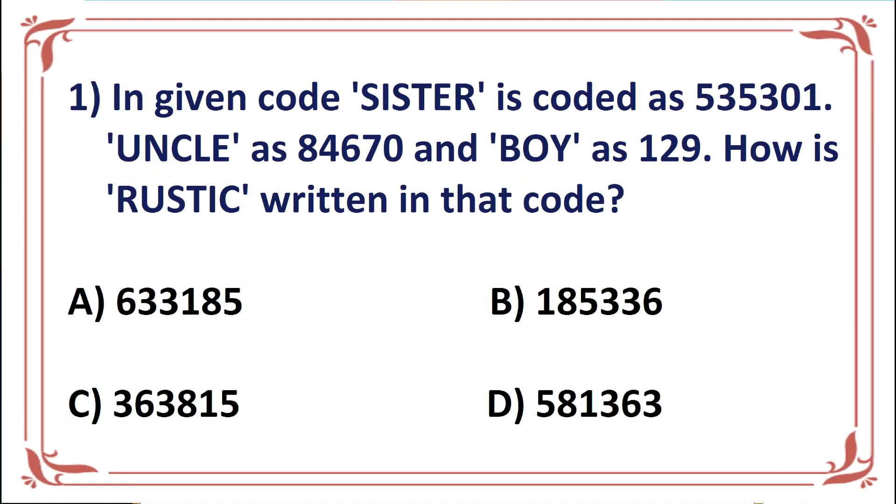The first question is, in given code, SISTER is coded as 535301, UNCLE is coded as 84670, and BOY as 129. So how is RUSTIC written in that code?